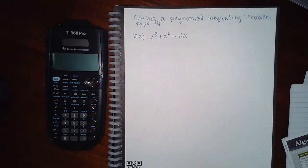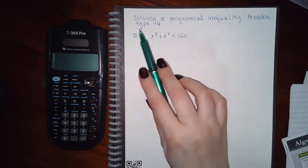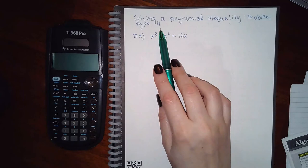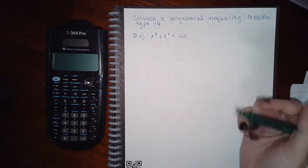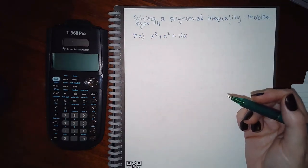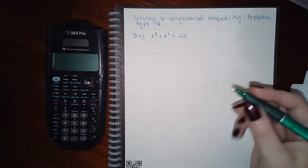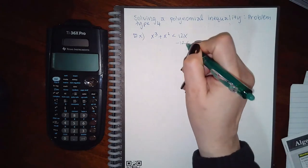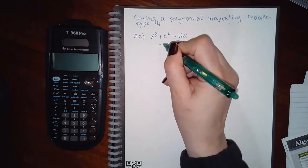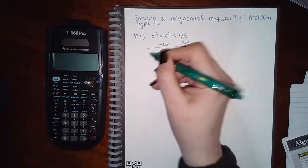In this video we're going to continue with module 34. This is solving a polynomial inequality problem type 4. The only difference between problem type 1 and 2 is that it's not in its factored form. So we do the same thing as we did with the quadratics and put it into factored form.